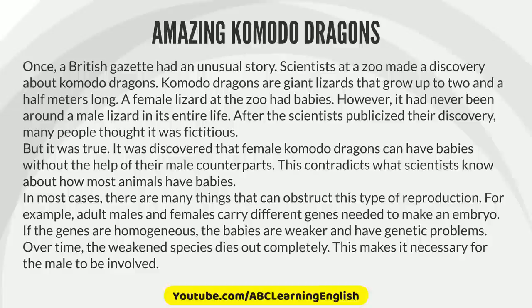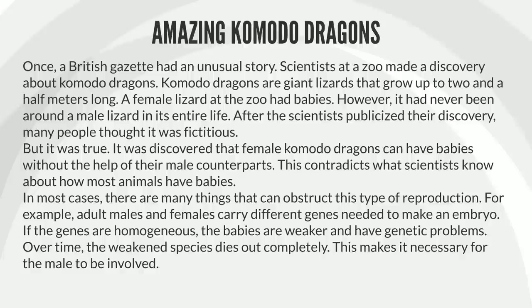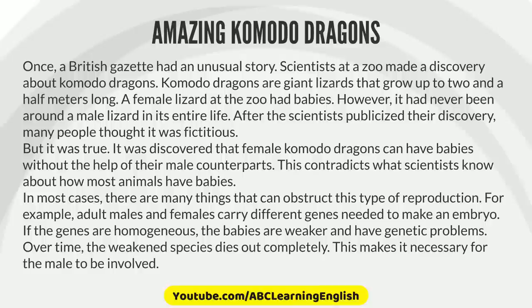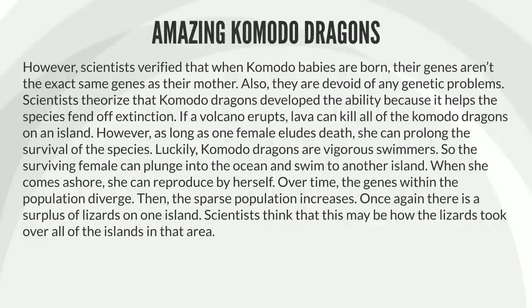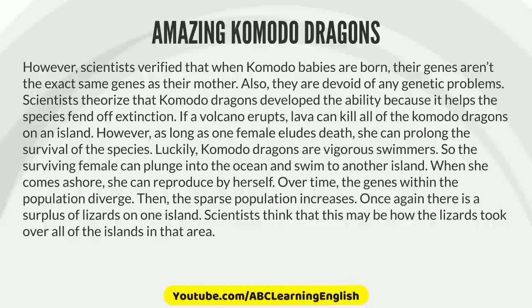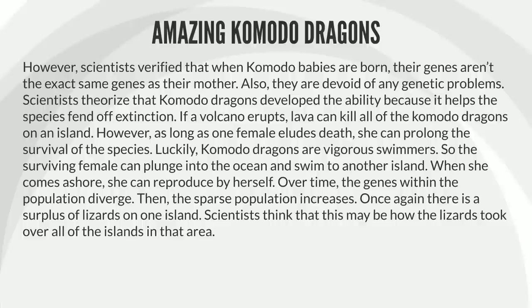In most cases, there are many things that can obstruct this type of reproduction. For example, adult males and females carry different genes needed to make an embryo. If the genes are homogeneous, the babies are weaker and have genetic problems. Over time, the weakened species dies out completely. This makes it necessary for the male to be involved. However, scientists verified that when Komodo babies are born, their genes aren't the exact same genes as their mother. Also, they are devoid of any genetic problems. Scientists theorize that Komodo dragons develop this ability because it helps the species fend off extinction.